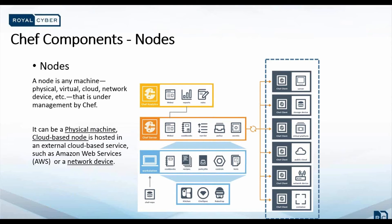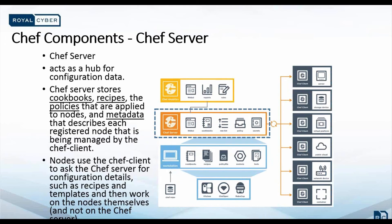A node is any machine — any physical machine, virtual, cloud, or any network device — that is under management by Chef. Types of nodes that can be managed by Chef include server, cloud, virtual machine, network device, or any container. The Chef server acts as a hub of configuration data. It stores cookbooks, the policies applied to nodes, and the metadata that describes each registered node being managed by Chef. Nodes use the Chef client to ask the Chef server for configuration details such as recipes, templates, and file distributions. The Chef client then does as much of the configuration work as possible on the nodes themselves, not on the Chef server. This scalable approach distributes the configuration efforts throughout the organization.